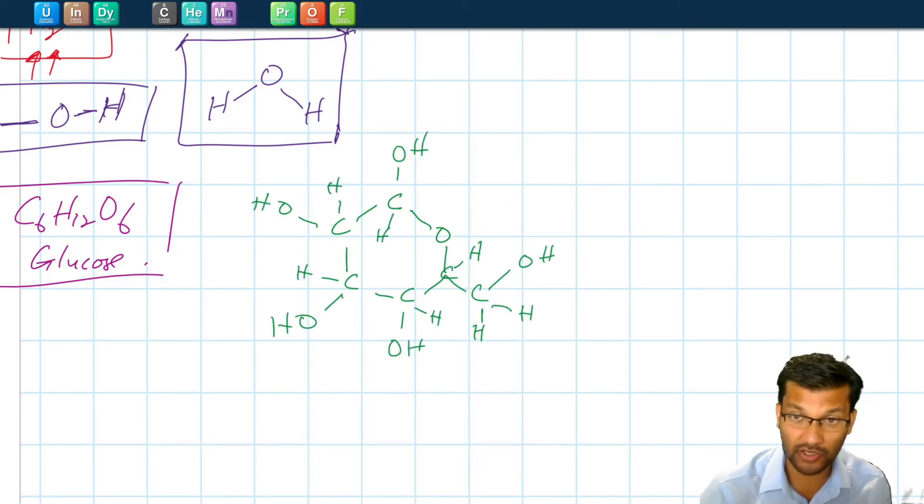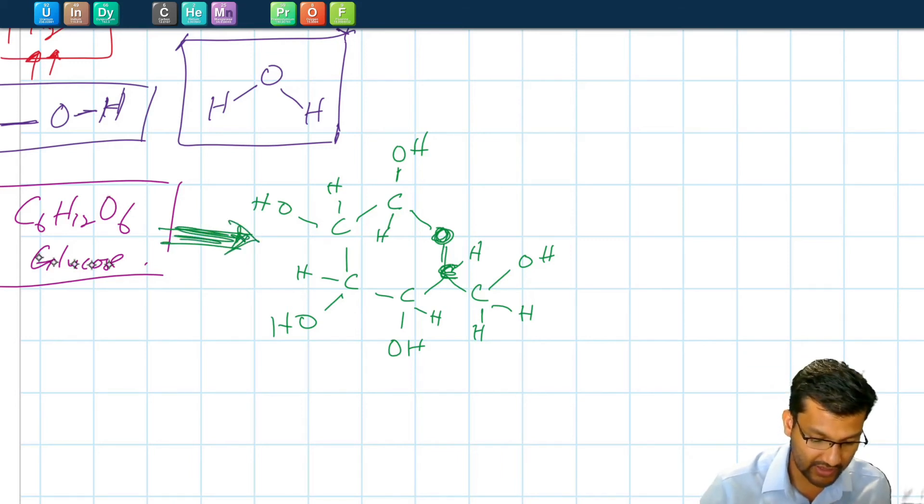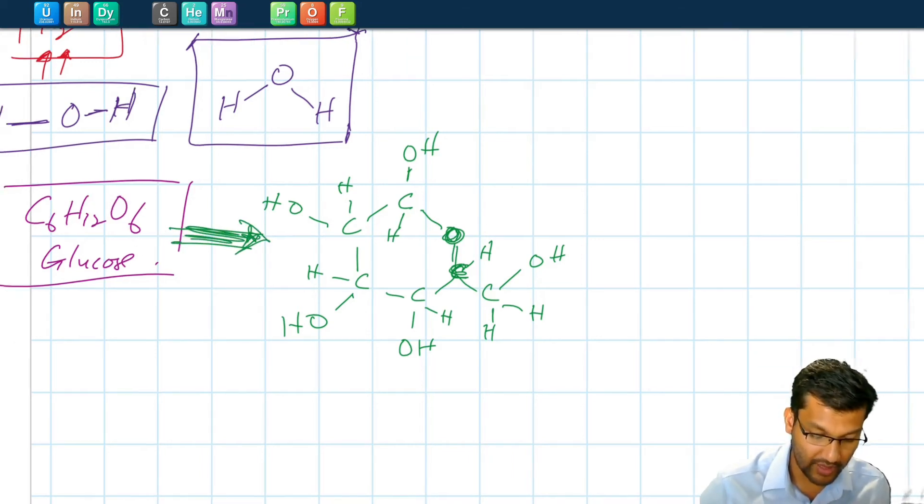And this is the structural formula of glucose. It tells us that some of these carbons are bounded in a ring with an oxygen atom there, and most of these have an oxygen hydrogen group sticking out of the carbon. There's another carbon sticking out of this ring right there. So that's the structural formula for glucose. That gives us a little bit more information than just the molecular formula.